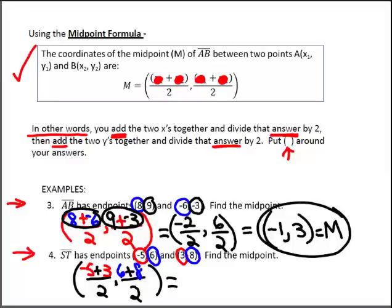I'm ready to simplify and do my math. So, this is equal to negative 5 plus 3 is negative 2 over 2. Comma, 6 plus 8 is 14 over 2. Simplifying further, negative 2 over 2 is negative 1. 14 over 2 is 7.